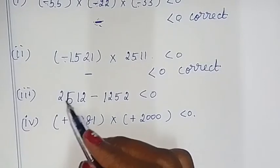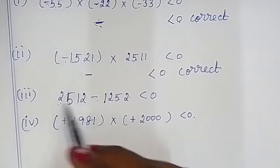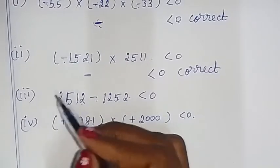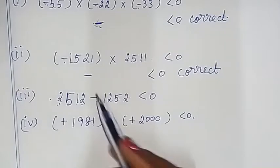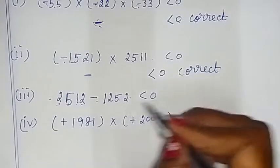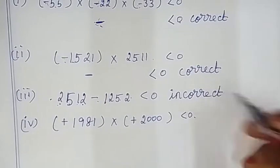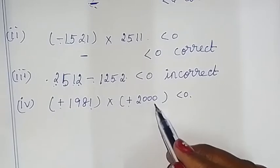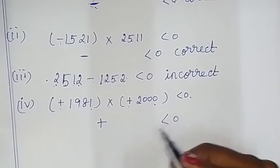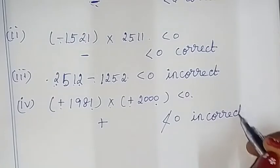Okay, 2,512 minus 1,252. So, if we multiply the number, 2,512 — symbol is plus. So, the answer is plus. That is less than 0. But 0 is greater than 0. Positive number is less than 0, which is incorrect. Okay, add this sum. That's all, thanks for watching children.